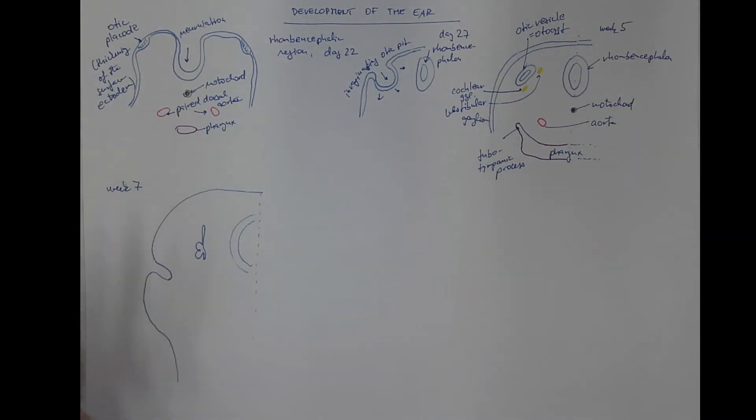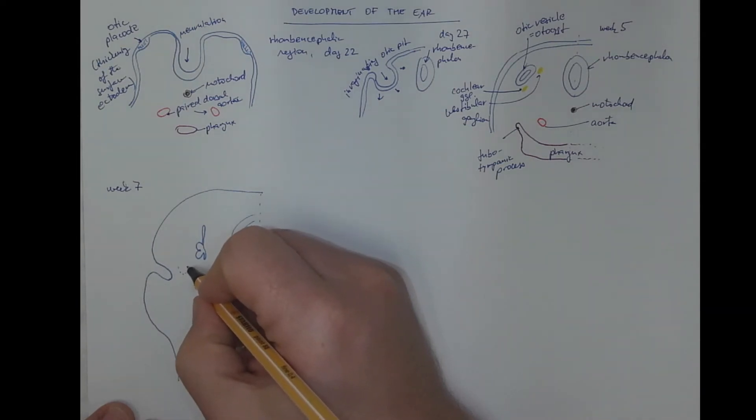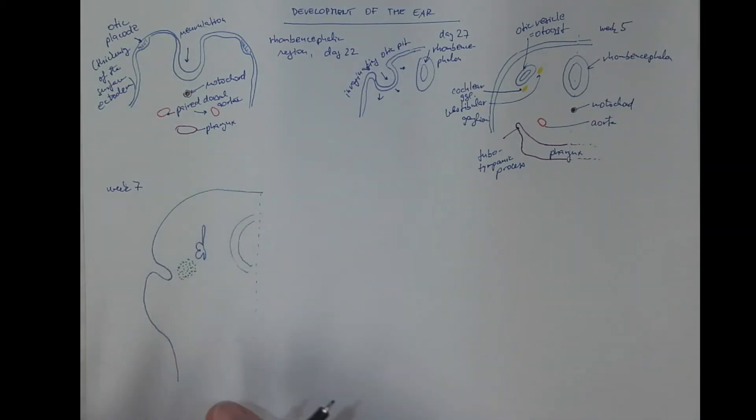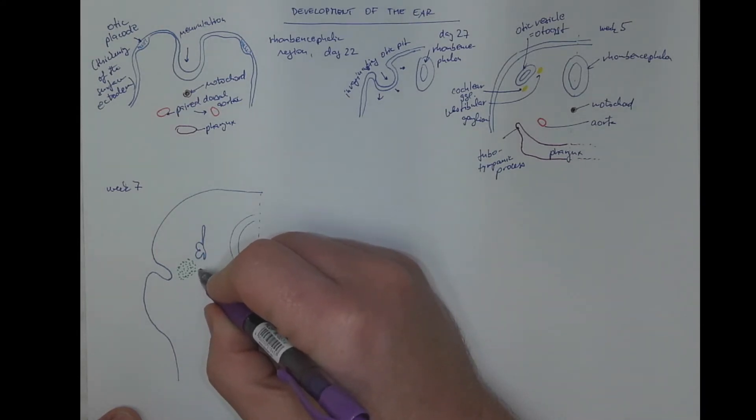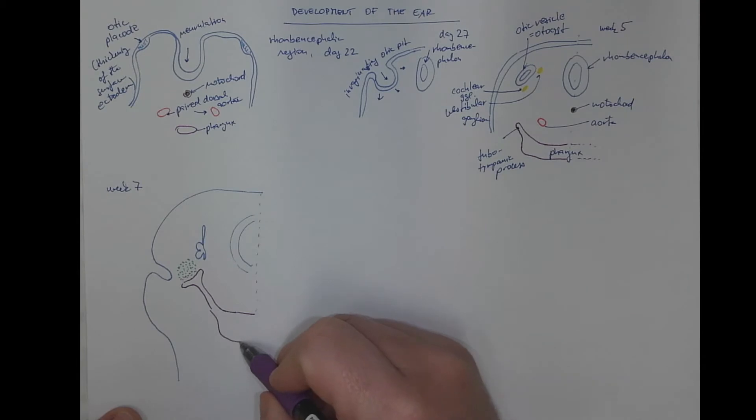The mesenchyme here is condensing, and it's the mesenchyme of the first and second pharyngeal arch. We will talk about pharyngeal arches in the future. So it's part of the mesenchyme of the head and neck region. And the pharynx is sending the tubotympanic process, which comes closer to this future middle ear mesenchyme. And here is the pharynx.